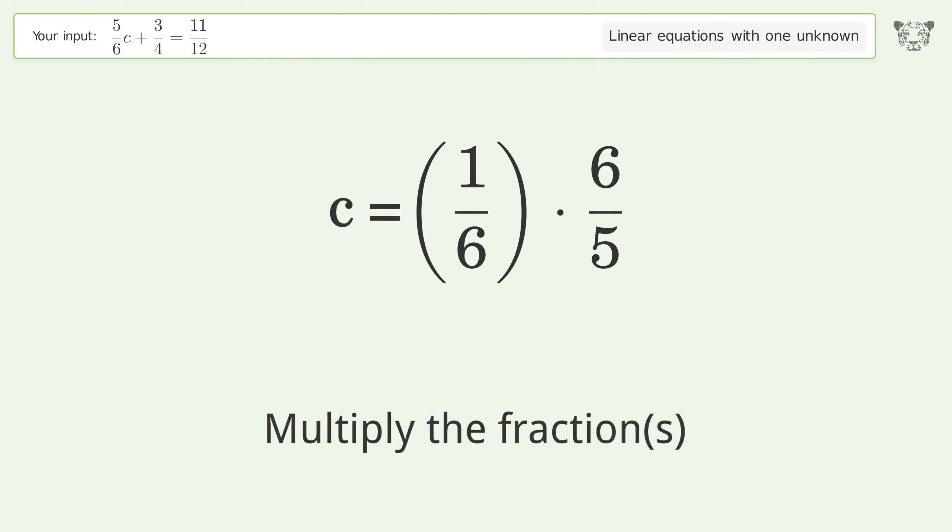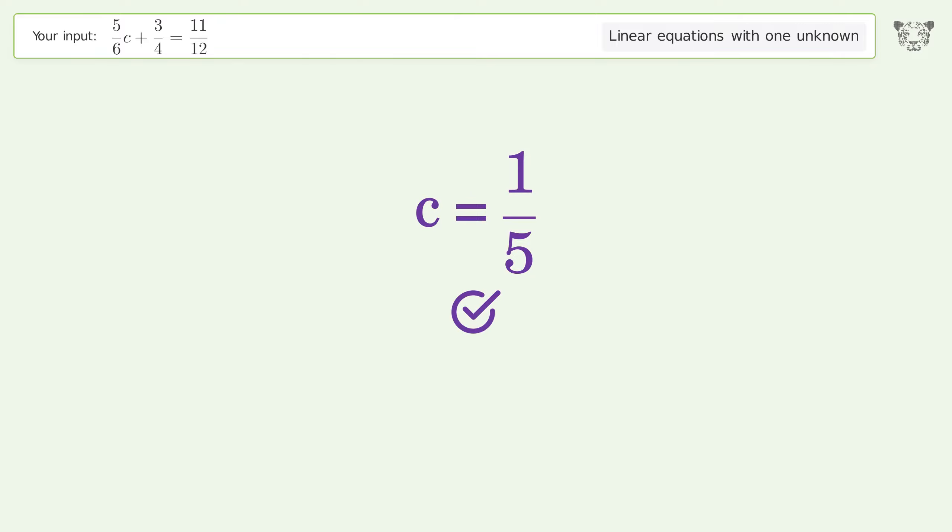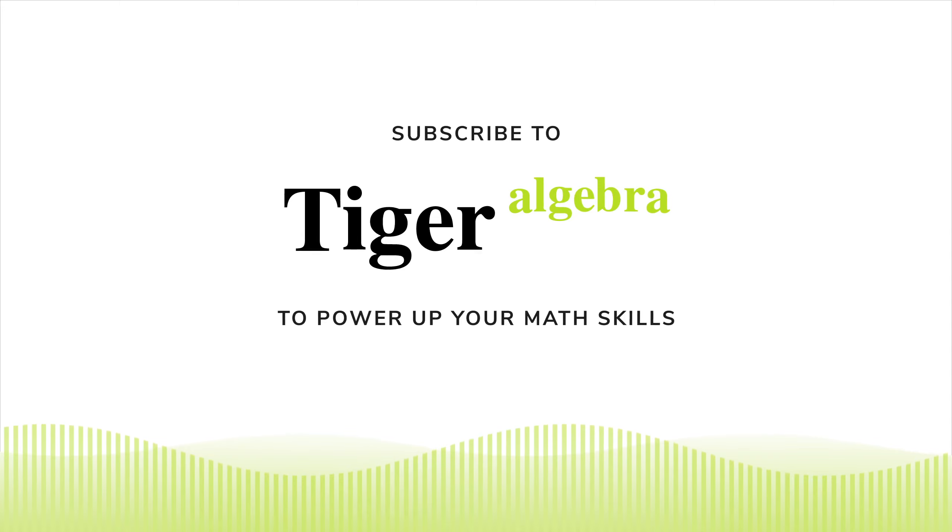Multiply the fractions. Simplify the arithmetic. And so the final result is c equals 1 over 5.